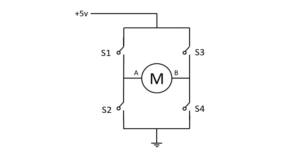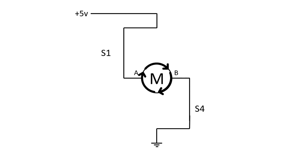So through the motor there will be no current. If we turn on switch one and switch four, you can clearly see that the current will flow in this way and then to the ground, and the motor will rotate in this direction — switch one and switch four closed.